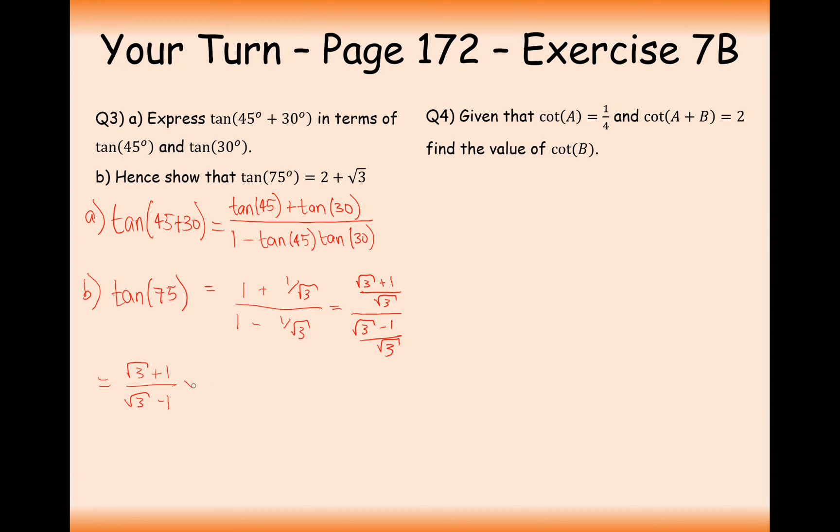Now we just need to rationalize the denominator here effectively. So times top and bottom by root 3 plus 1, root 3 minus 1. Or root 3 plus 1 on top and bottom as well. So in this case we're going to get 3 plus 2 root 3 plus 1 all over 3 minus 1. So that's going to be 2 on the bottom. We can cancel our factors of 2 on the top and bottom. So we get 2 plus root 3.